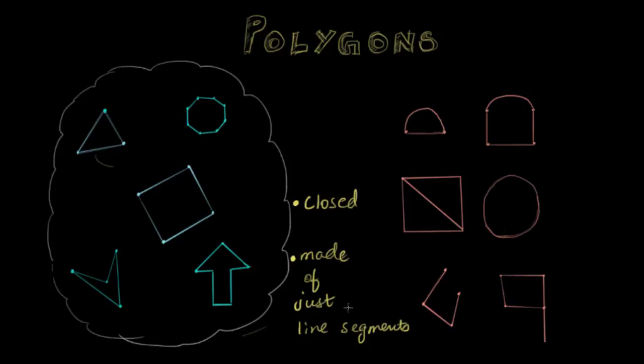But if I take both of these, closed and made of just line segments, then I can see that this is closed, made of only line segments. This is closed, made of only line segments. So maybe these two are the only rules.